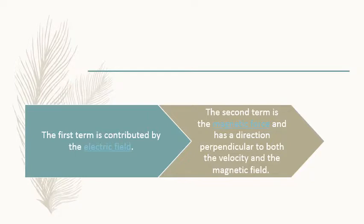The first contribution term is contributed by the electric field: Q·E — this is the electric contribution. The second contribution is due to the magnetic field, and has the direction perpendicular to both velocity and magnetic field. Interestingly, whenever we place a moving charged particle in the presence of both electric and magnetic fields, both fields give their effect individually: the first term due to electric field, the second due to magnetic field.